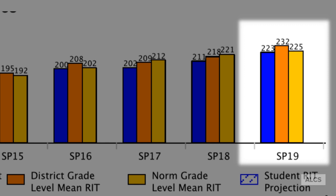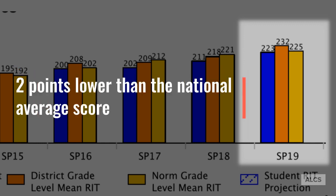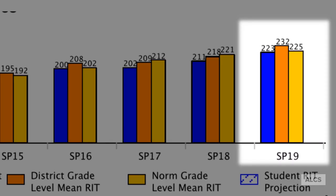Looking at this student's test results from the spring of 2019, we can make the following observations. On one hand, this student's score is noticeably lower than the median score of his grade level peers in the same school. On the other hand, his score is only two points lower than the national average. As a side note, we can also see that this student's peers at the school perform noticeably higher than the national average.